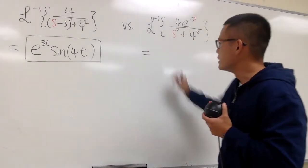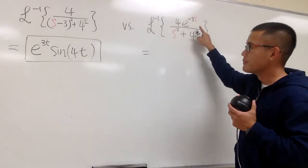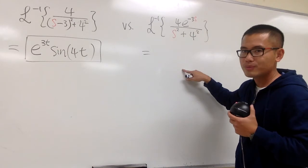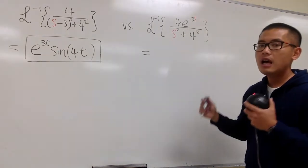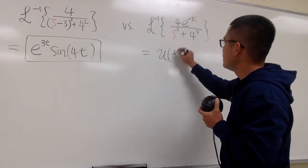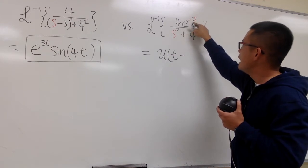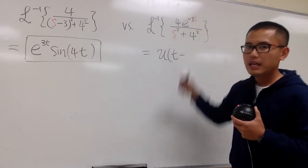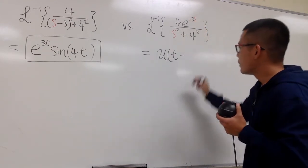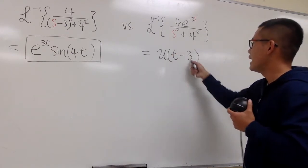The way that you think about it is, whenever I have e to the some kind of s in the s world, and I want to go back to the t world by doing the inverse Laplace, I'm going to get u of t minus whatever this a value is. This is technically negative a s, and the a value here is positive 3. So we must have u of t minus positive 3, the a value.